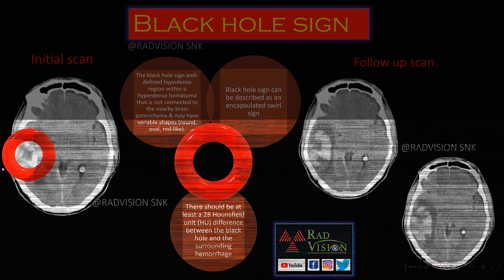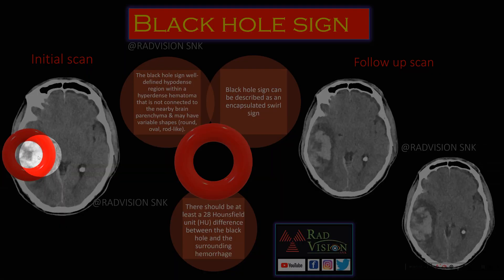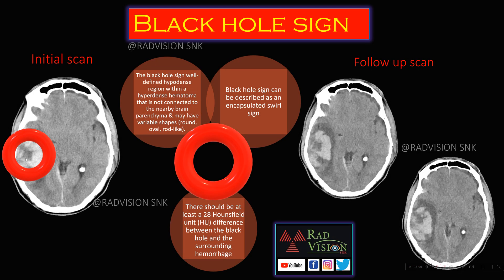One important point to remember: there should be at least a 28 HU difference between the active extravasation of blood (unclotted blood) and the clotted blood to define it as the black hole sign. Remember the black hole sign.